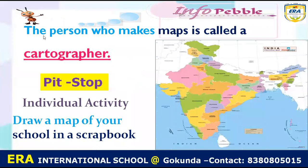The next concept is cartographer. The person who makes the map is called a cartographer. Now for an activity — draw a map of your school in a scrapbook. This is an individual activity you have to do yourself.